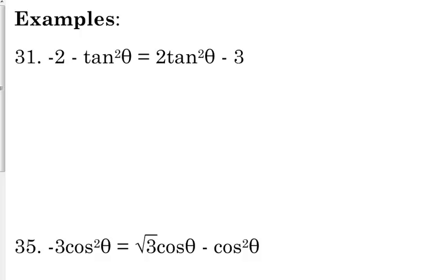This is similar to the ticket out the door from Friday, where you had cosine on both sides. Here we have tangent squared on both sides. So our first step should be to get tangent squared on one side — we don't want it on both sides. One of them is negative, so I'm going to add tangent squared to both sides.